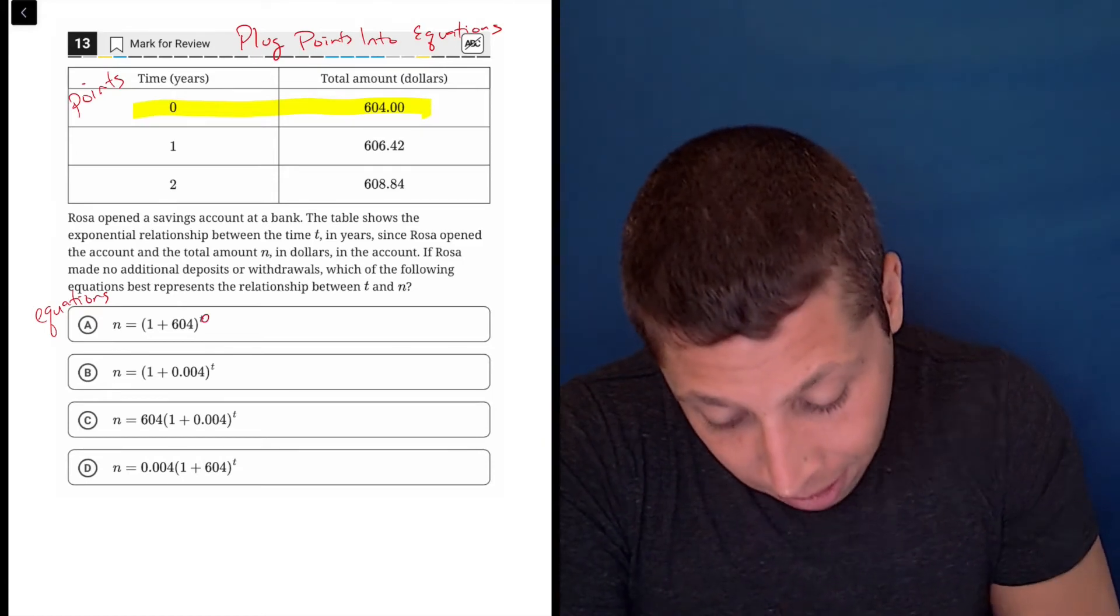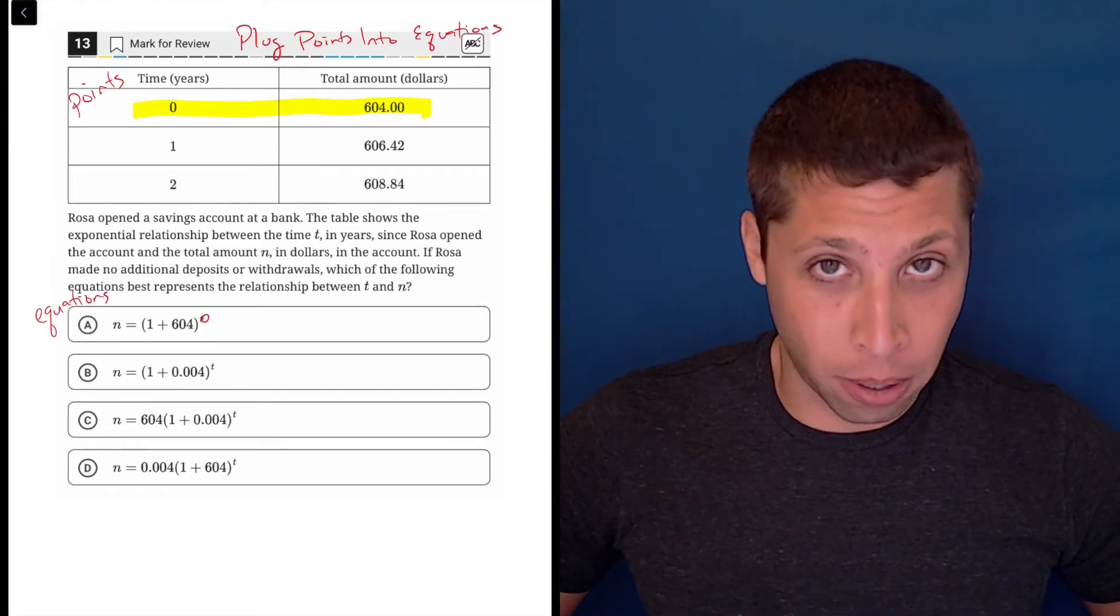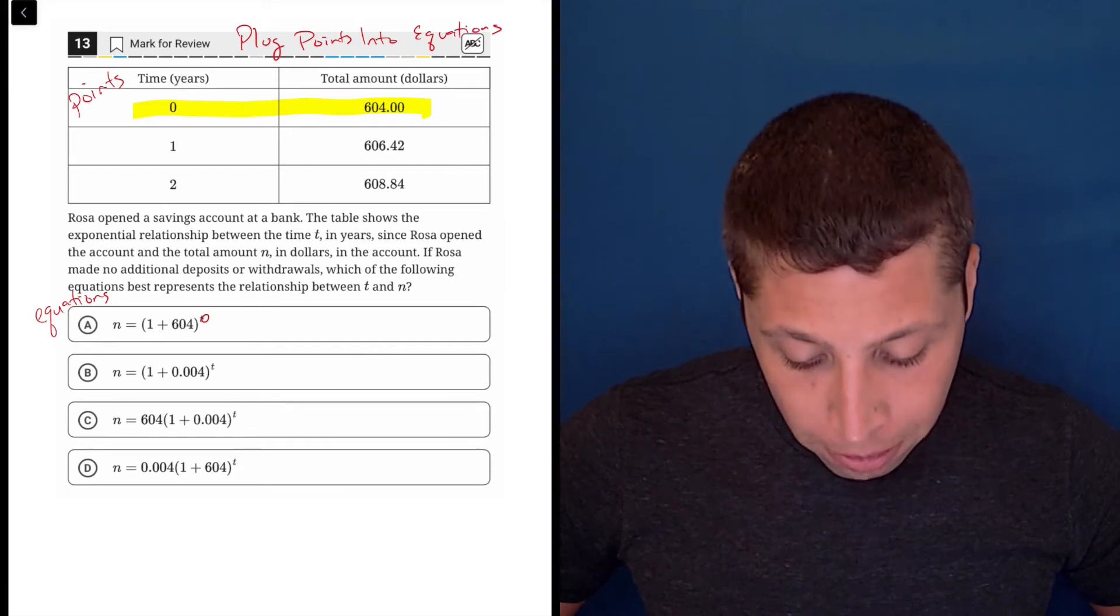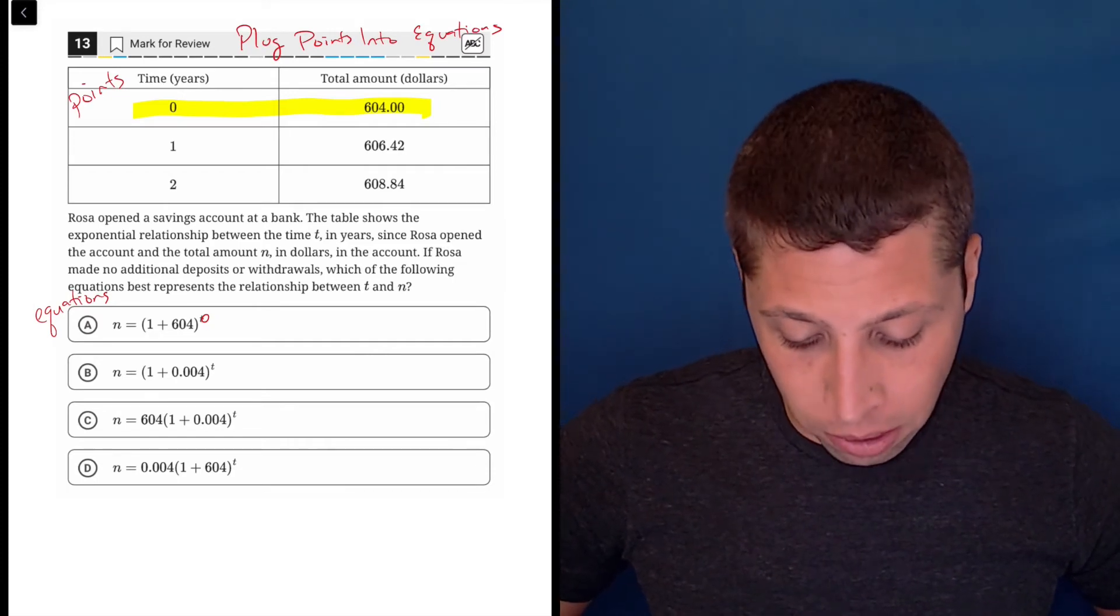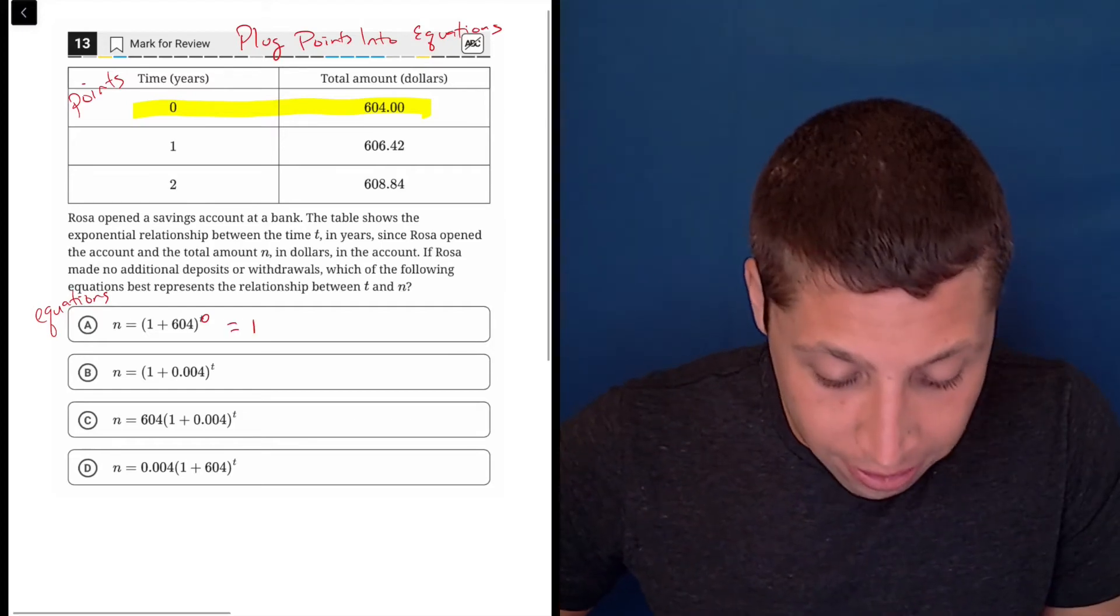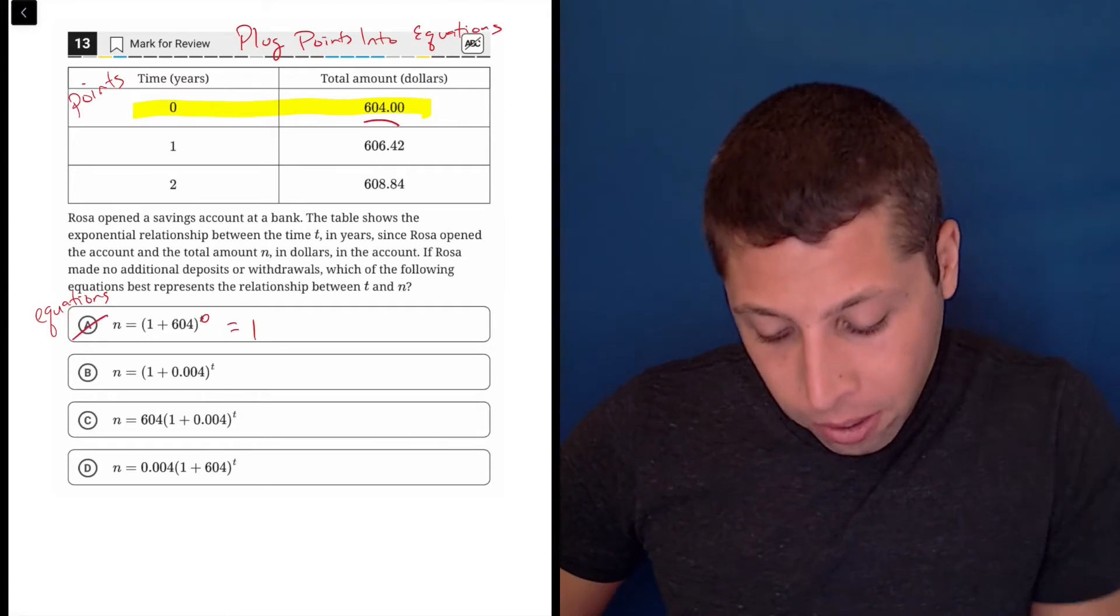If I raised all of these to the 0, remember any number raised to the 0 is equal to 1. So 1 plus 604, it doesn't matter that it's 605 because if it's raised to the 0, it still becomes 1. But I want it to be 604. So that is wrong.